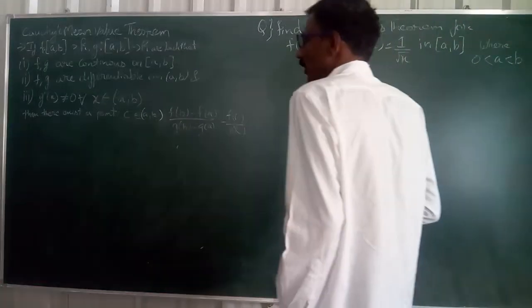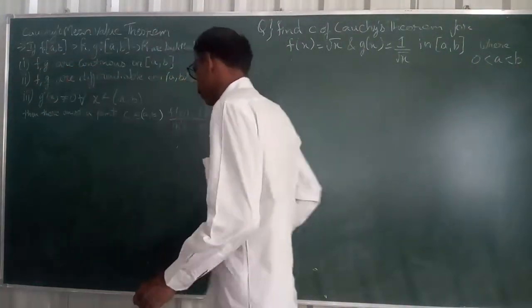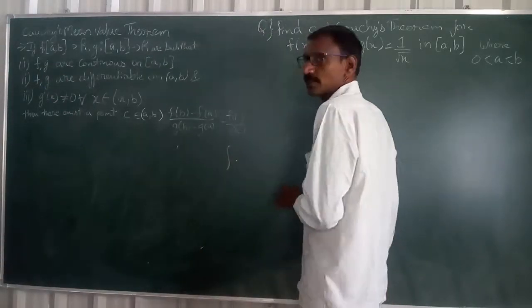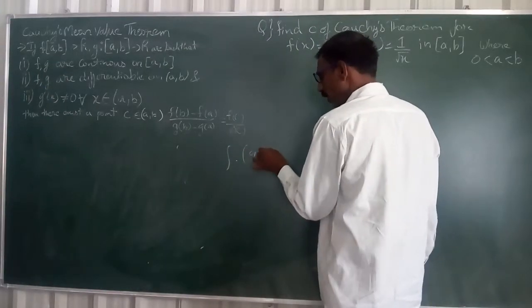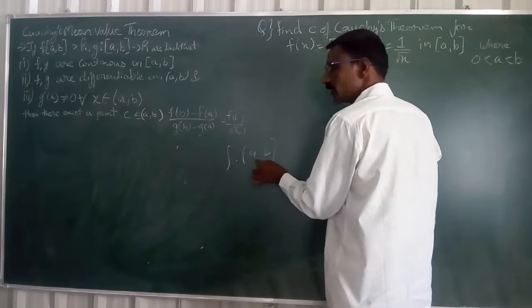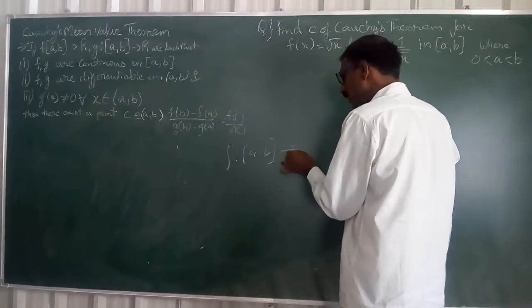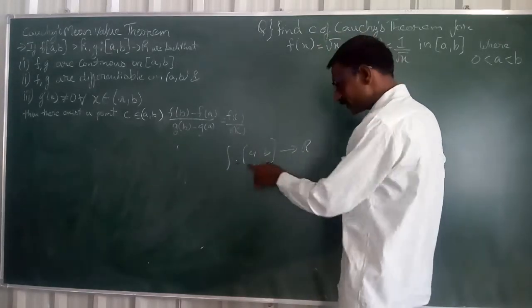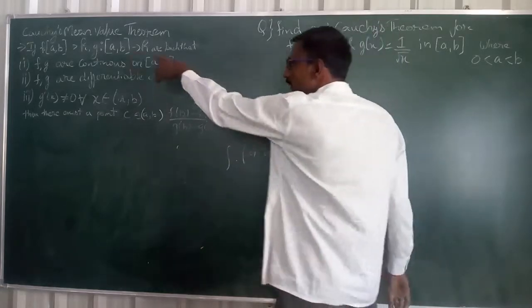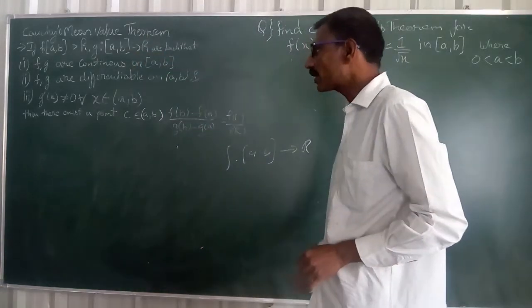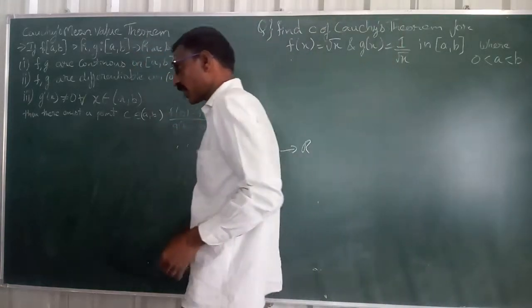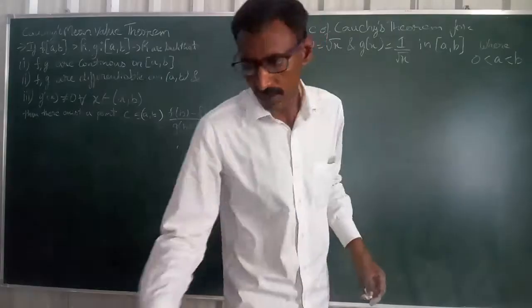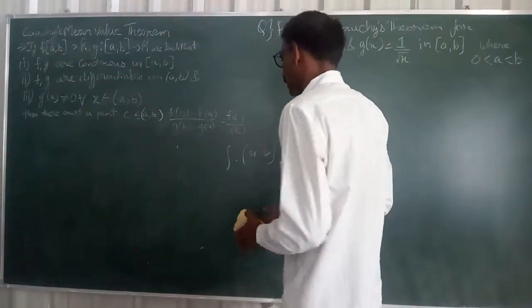Cauchy's Mean Value Theorem. Here, we have f and g. What is called? f: [A, B] → ℝ and g: [A, B] → ℝ. A, B is a closed interval. These are real numbers. Again, it is related to ℝ. This f and g are functions. In analogy, these are functions. Such that f and g are continuous functions. That's all. Continuous functions.